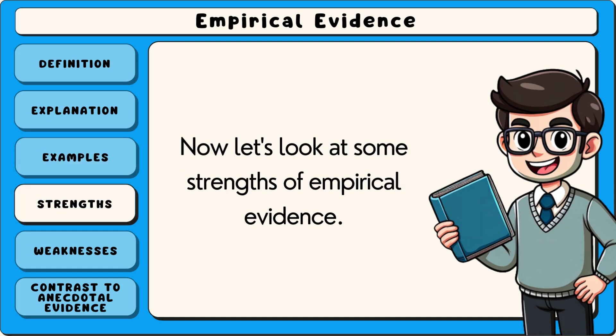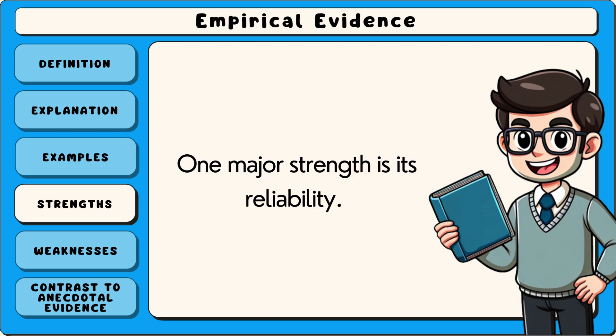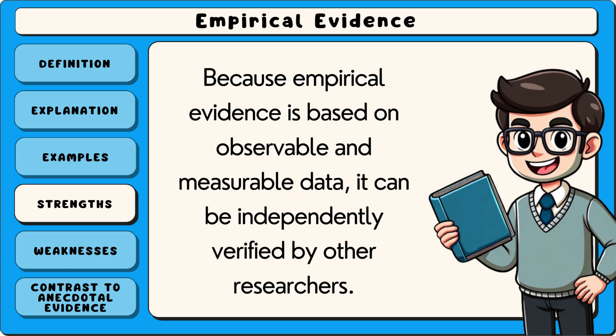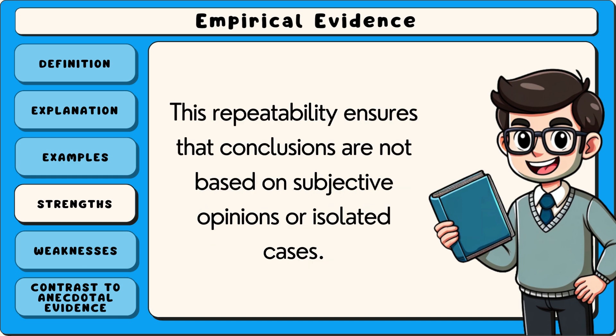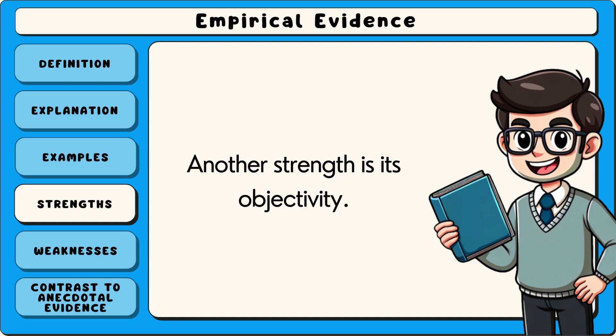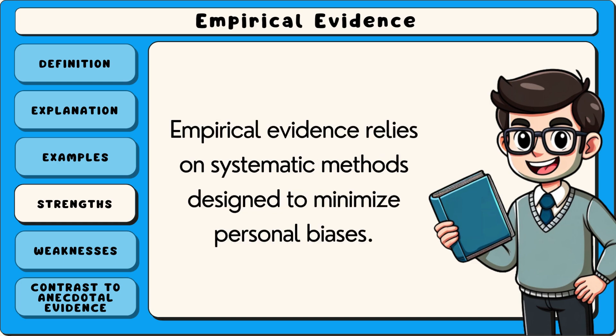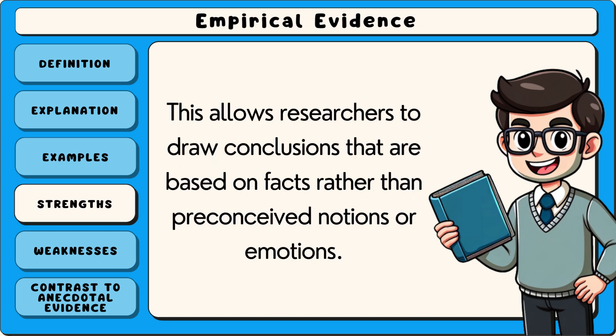Now let's look at some strengths of empirical evidence. One major strength is its reliability. Because empirical evidence is based on observable and measurable data, it can be independently verified by other researchers. This repeatability ensures that conclusions are not based on subjective opinions or isolated cases. Another strength is its objectivity. Empirical evidence relies on systematic methods designed to minimise personal biases, allowing researchers to draw conclusions based on facts rather than preconceived notions or emotions.